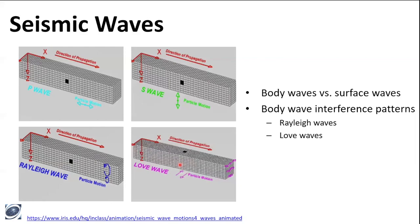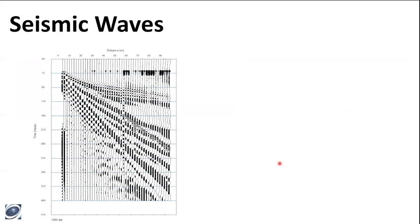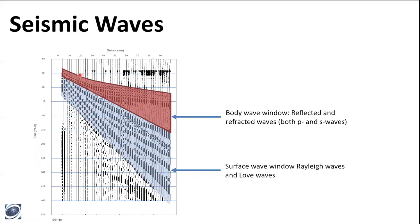Rayleigh waves have a retrograde elliptical motion. Love waves have a particle motion parallel to the surface but perpendicular to the direction of propagation. You can actually measure VS30 with Love waves, but it's pretty difficult because generating low-frequency Love waves is not easy. In data, this is what we call a shot break — I hit the ground and recorded ground motion with vertical component geophones. Because we're looking at vertical component geophones, we'll only see P waves and Rayleigh waves. Shot breaks separate body waves from surface waves, giving us a body wave window for reflected and refracted waves, and a surface wave window for Rayleigh waves.